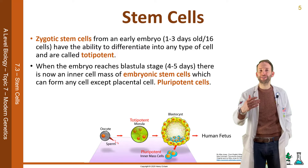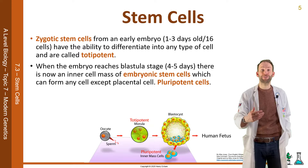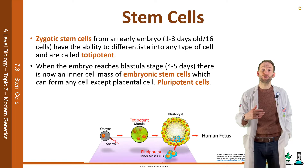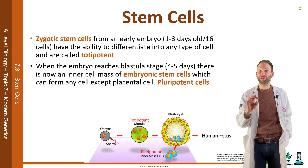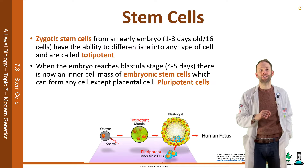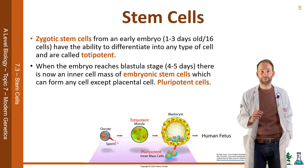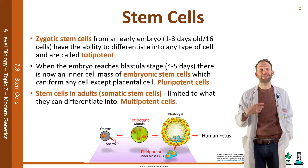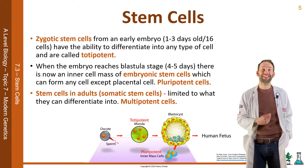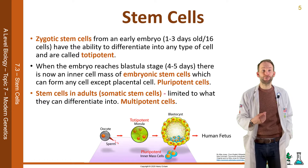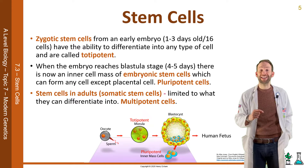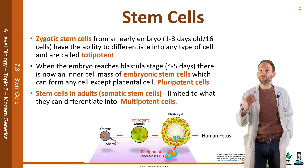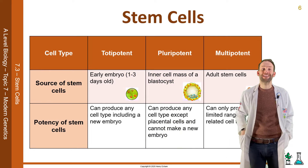When the embryo develops a bit further, day four to day five, it's now in what we call the blastular stage, and there is now an inner cell mass of embryonic stem cells which can form any cell except placental cells — so we call these pluripotent cells. You can also find stem cells in adults, called somatic stem cells, for example in your bone marrow, but these are limited to what they can differentiate into, and we call these multipotent cells.